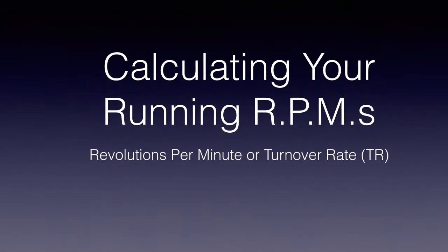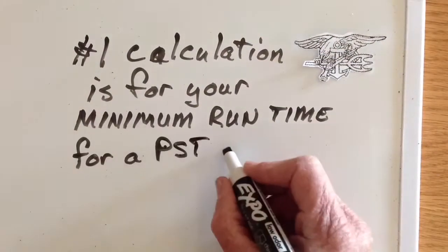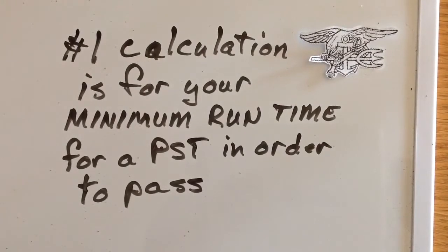This next video is going to help you calculate your RPMs when you're running your mile and a half. It has three different levels of calculations. The first is for your minimum PST time, which is a real confidence builder. In boot camp with only two hours of sleep, a lot of guys just run as hard as they can because they haven't calculated their RPMs. Taking out the guesswork will give you a much better time and a lot more confidence on your PST.